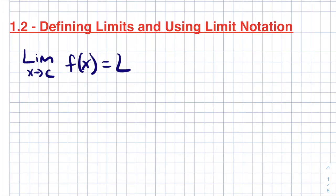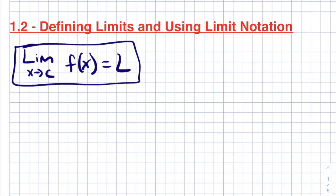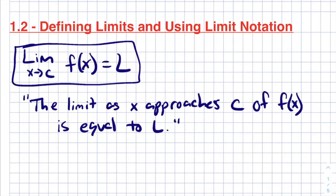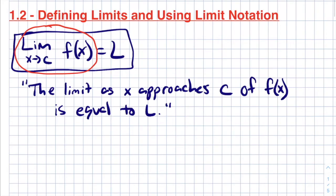If we were to try to read this limit statement out loud, we would read this as: the limit as x approaches c of f of x is equal to L. One thing I'd emphasize is that pretty much this whole left side is one thing. We sometimes get focused on f of x is equal to L and try to separate the limit statement off, but in fact it is one thing — the limit as x approaches c of f of x. It's all together.